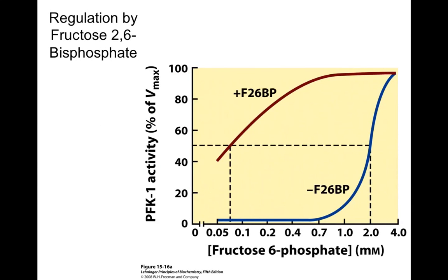There seems to be some confusion about the role fructose 2,6-bisphosphate plays. Fructose 2,6-bisphosphate is an important allosteric regulator of the substrate cycle. Importantly, fructose 2,6-bisphosphate, or F2,6-BP, is going to activate our phosphofructokinase 1. Whenever we have high levels of it, it's going to allow this enzyme to work more efficiently. On the bottom, we just have our substrate — what this enzyme is working on.